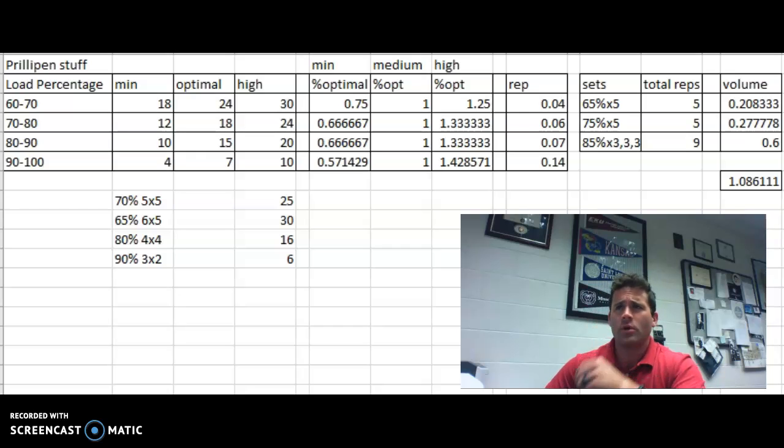So in the upper left, we're going to see the normal Prilepin chart where we're going to see what load the individuals are using, so that's within 60-70% of their max, 70-80, etc. And then what is the minimal number of reps we're doing so we're having a training effect, what's the optimal per session, and then what's the high end, or essentially the maximum amount of volume we're going to have them do per set.